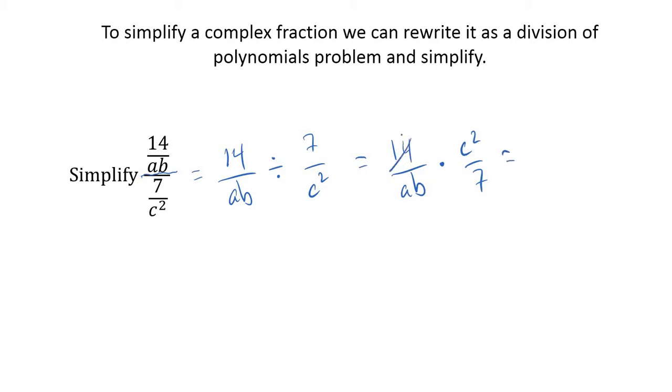Then we simplify: 14 over 7 simplifies to 2 over 1, so we get 2c squared over ab. Notice how much nicer that looks—we've just got one numerator and one denominator. That's the method we're going to employ today. If you've got a fraction divided by a fraction, just rewrite it and multiply by the reciprocal.